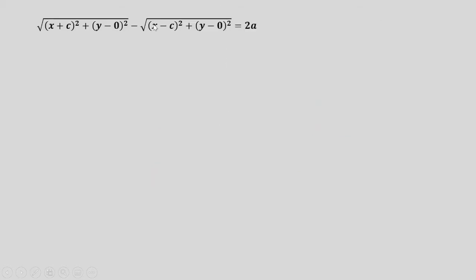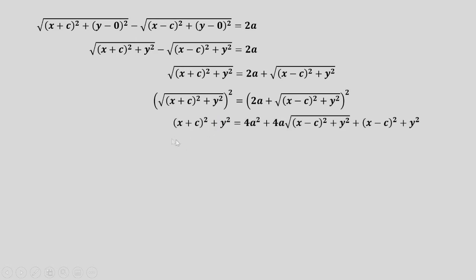By distance formula, we can set up this equation. Simplifying y minus 0 gives us this one. Rearranging the terms gives us this equation. And then squaring both sides will remove the square root on the left side of the equation.